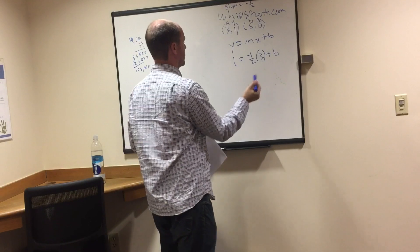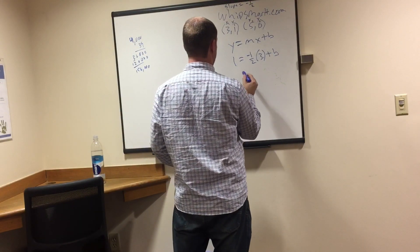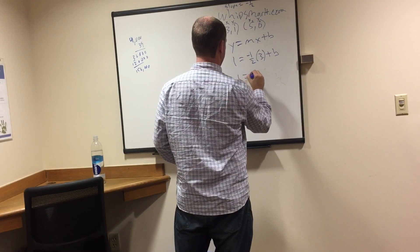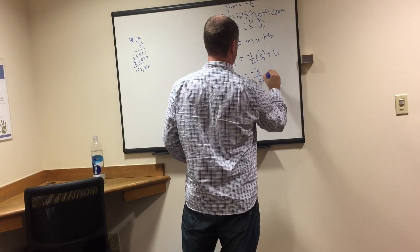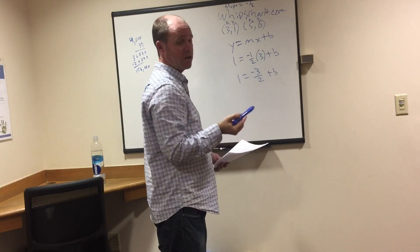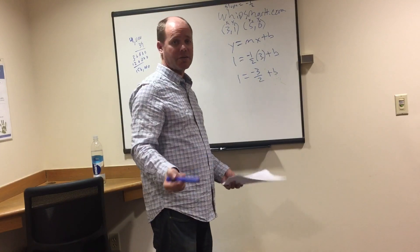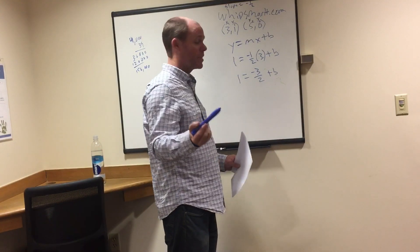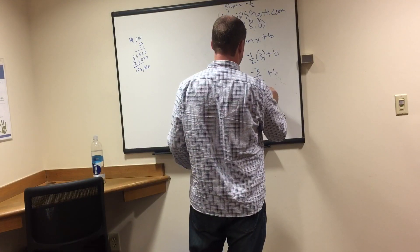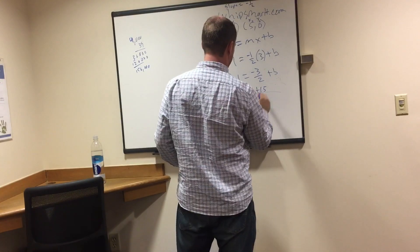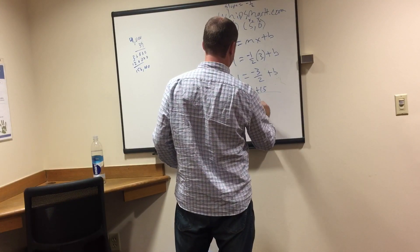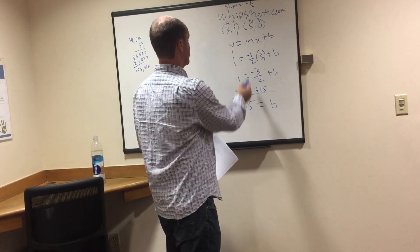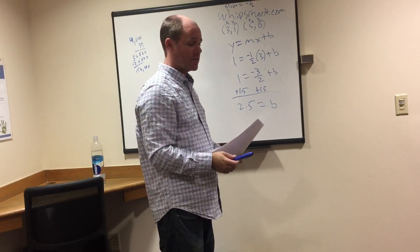We need to get b by itself, so we add three halves — or 1.5 — to both sides. We get 2.5 equals b. That's our y-intercept. So: y-intercept is 2.5 and slope is negative one half. That's our answer. Those are our 10 questions.